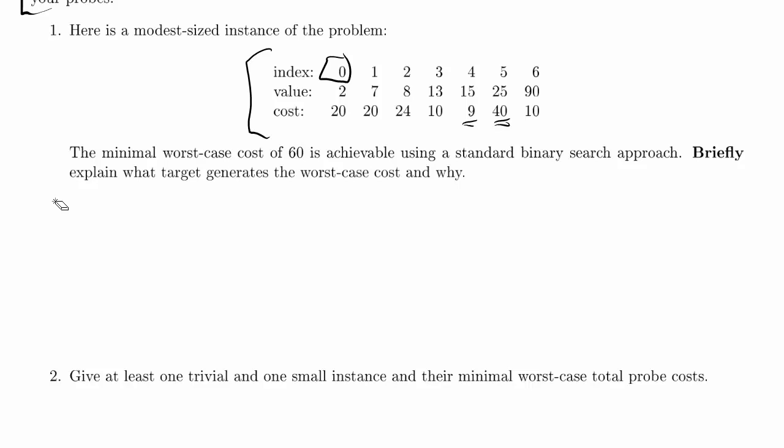This idea of minimal worst case cost, there's a whole lot packed into that. So let's try and unravel that a bit. One way that you would compare algorithms on problems like these would be to ask what's the worst case cost that the algorithm will pay. For example, let's say that the target will, let's see, 60 for binary search. So let's find the target that would do that.